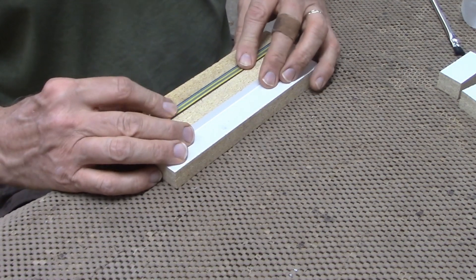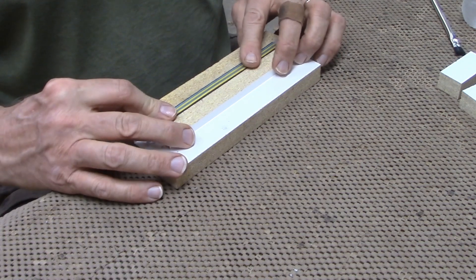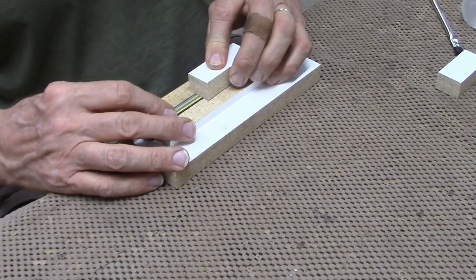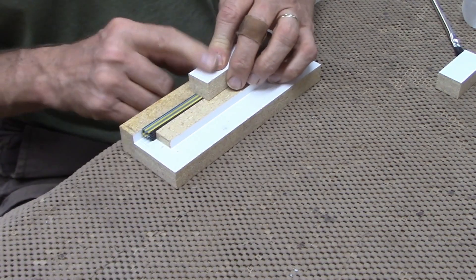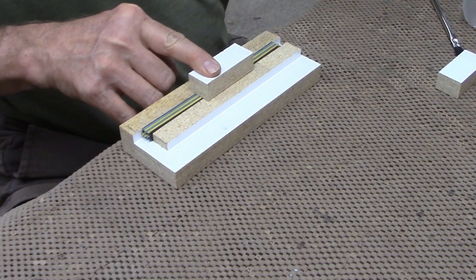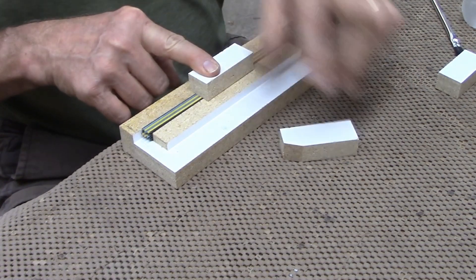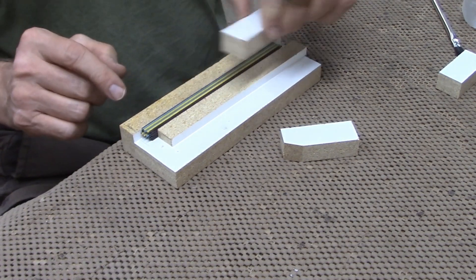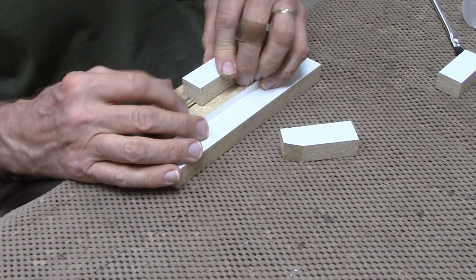Then I'll have this piece squeezing the sticks together in this direction, and three little pieces pushing down from the top. The reason I don't want just one piece across the whole top is I want to be able to see what I'm doing.